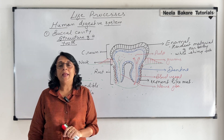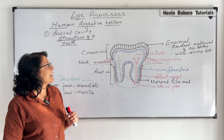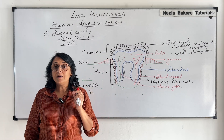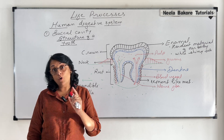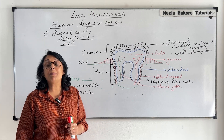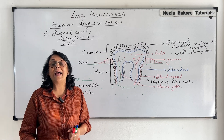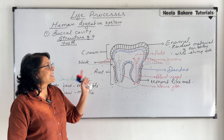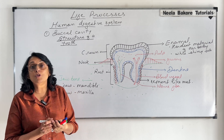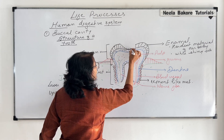Sometimes we complain of dental caries or cavities. When we eat something, the food particles remain stuck between our teeth. If we don't clean them properly, these food particles attract bacteria. When the bacteria grow in our mouth, they secrete acid. Slowly this acid dissolves the enamel, and this layer becomes thinner and thinner.